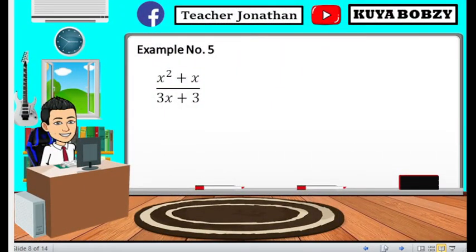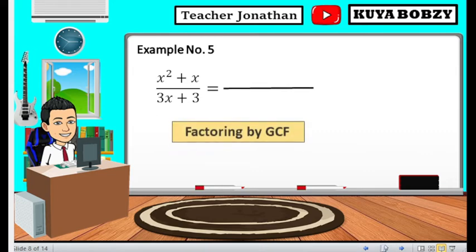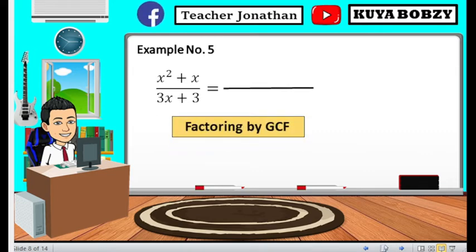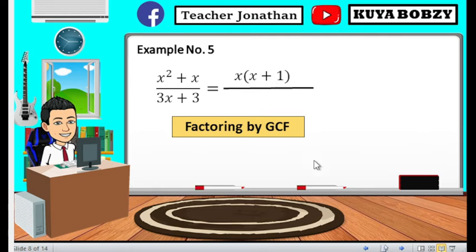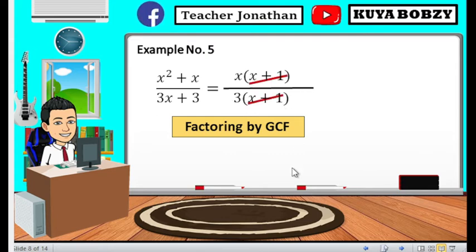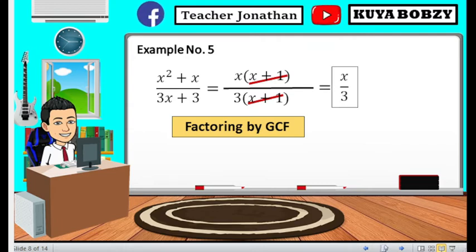Moving on to example number 5. We have x squared plus x all over 3x plus 3. We can use factoring by GCF. The GCF for x squared plus x is x: x squared divided by x gives x, and x divided by x gives 1. For the denominator, the GCF is 3: 3x divided by 3 is x, and 3 divided by 3 is 1. We can cancel out x plus 1 for both numerator and denominator, leaving x over 3 as the final answer.